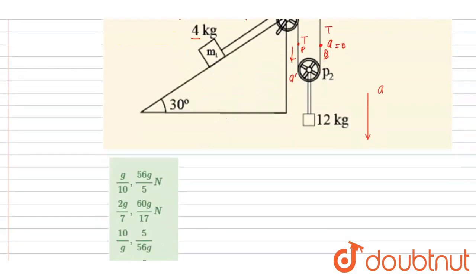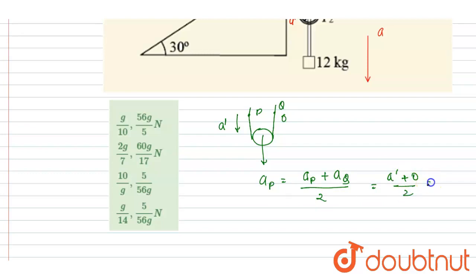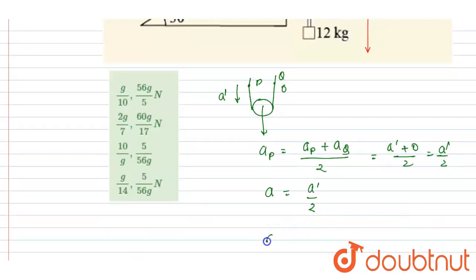I will use the average formula to get a relation between a and a dash. This point of the pulley has acceleration a dash and this point has zero acceleration, so the pulley's average acceleration is: acceleration of pulley equals (acceleration of point P plus acceleration of point Q) divided by 2, which gives (a dash + 0) / 2 = a dash / 2. The acceleration of the pulley equals the acceleration of the 12 kg block, so we get a dash equals 2a.